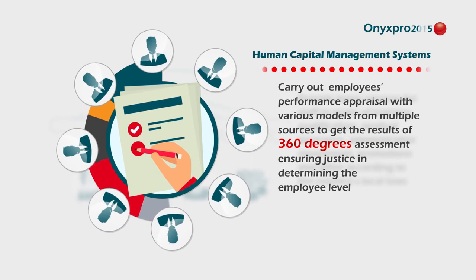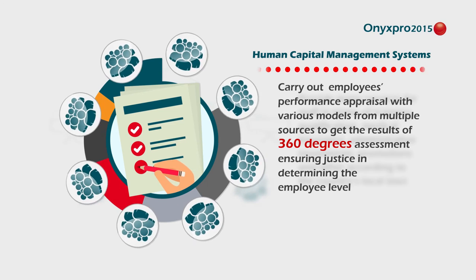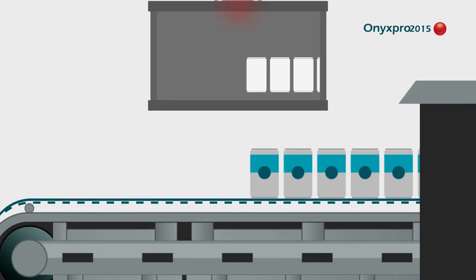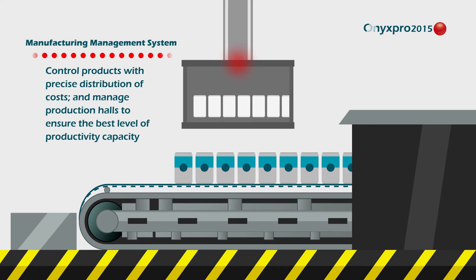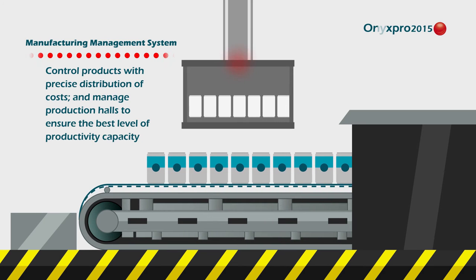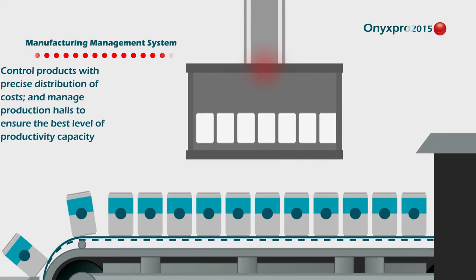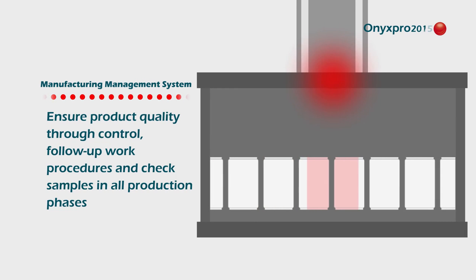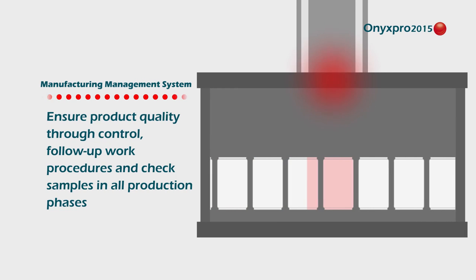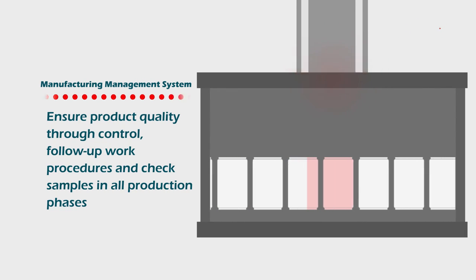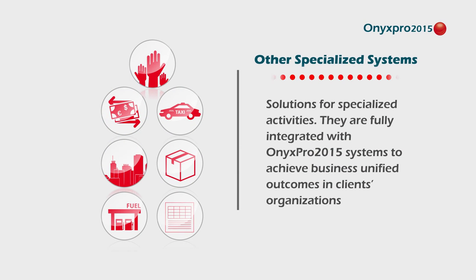Onyx Pro 2015 supports the organization's human capital aspirations in functions and processing, development of a positive work environment, and manufacture management systems that control production operations and monitor product details on time — such as cost distribution and quality procedures — controlling products until they are ready.